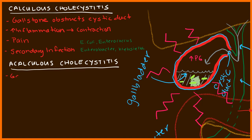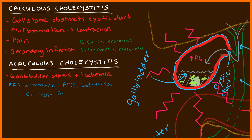How can acalculous cholecystitis happen? One way is through gallbladder stasis or ischemia — if the gallbladder is not contracting or there is decreased blood flow, this can lead to inflammation of the wall. Risk factors include immunosuppressed states such as AIDS and leukemia, and critical conditions such as burn patients, septic shock, and cardiac arrest — these patients are very hypotensive, leading to decreased blood flow to the gallbladder.